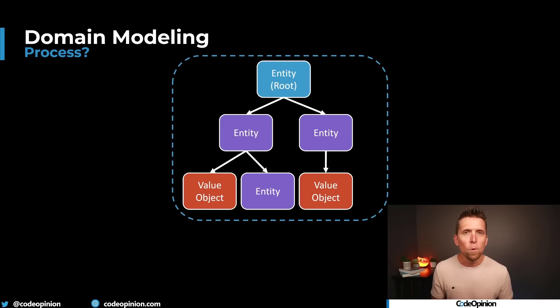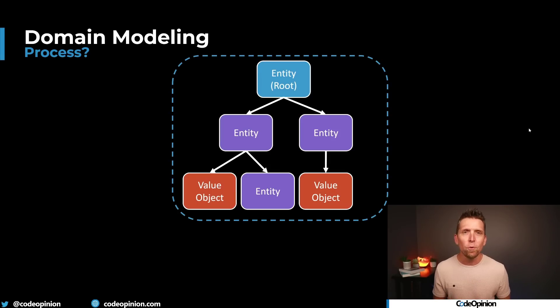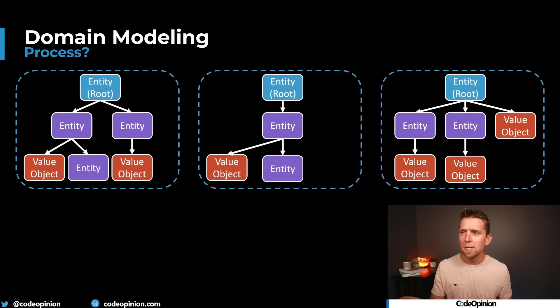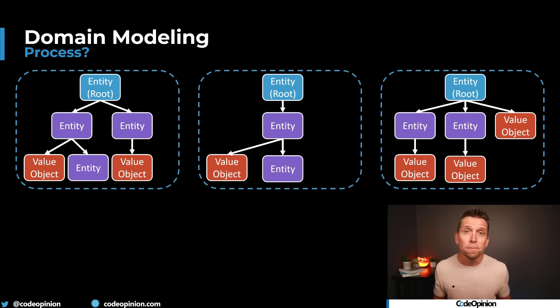So this is pretty typical. When we're thinking about our system and designing, we have these entities and value objects. We kind of have this cluster of related entities, we define what a root is, there's our aggregate. And we do this all over our entire system — we define all these entities, all these different aggregate roots. What's driving us to make these decisions about what these aggregate roots are, what an entity is, what are the value objects? I think this common approach to creating aggregates is actually kind of backwards.